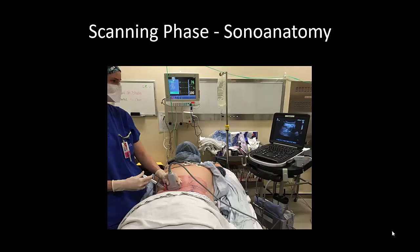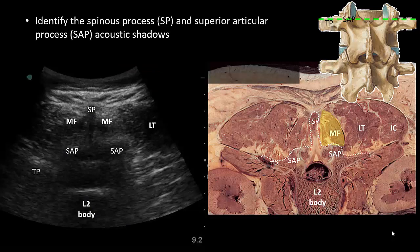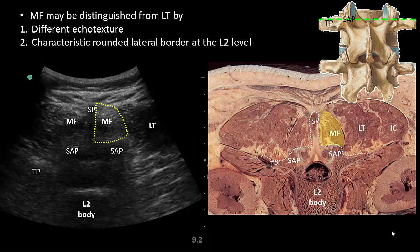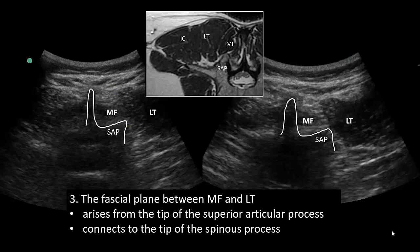With the probe in a transverse position over the midline, the acoustic shadows of the spinous process of the underlying vertebra are identified together with the superior articular process and transverse process. Using these as landmarks, multifidus can be identified as the muscle immediately adjacent to the midline. Longissimus thoracis is lateral to multifidus, and the plane between them can be identified using the following characteristics. First, the two muscles are usually different in echo texture. Second, at the level of L2, multifidus has a characteristic rounded appearance; at lower lumbar levels it is much smaller and more triangular. Third, the dividing plane usually runs between the tips of the superior articular process and the spinous process, so these can be used as landmarks. This MRI image shows the fat-filled planes between the muscles and how they communicate with each other.